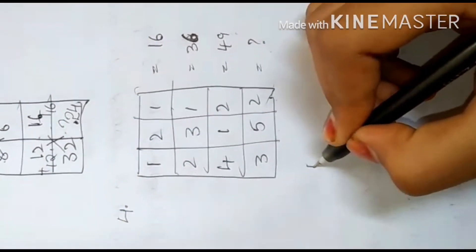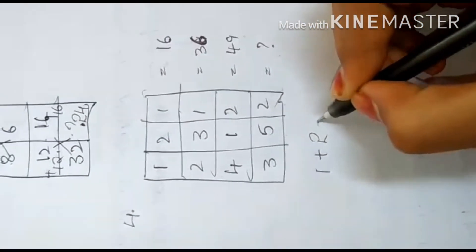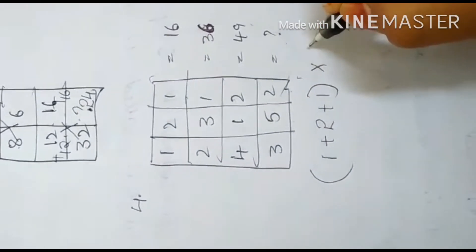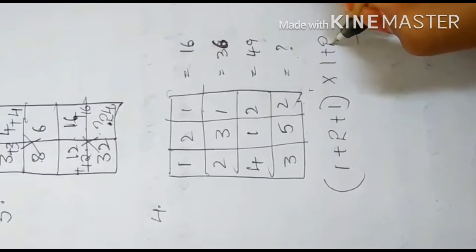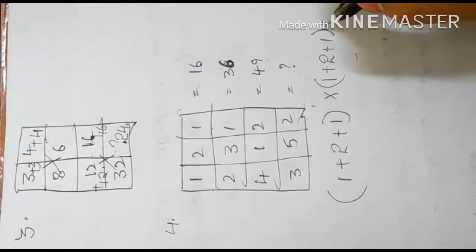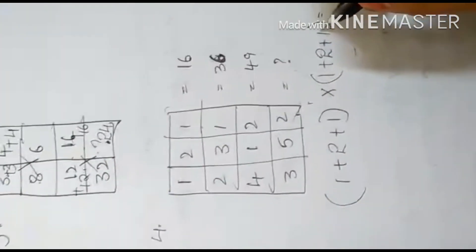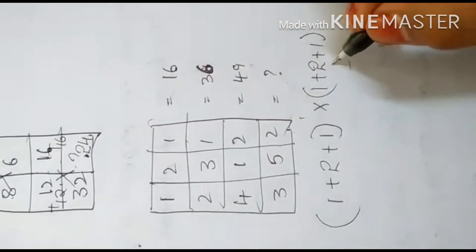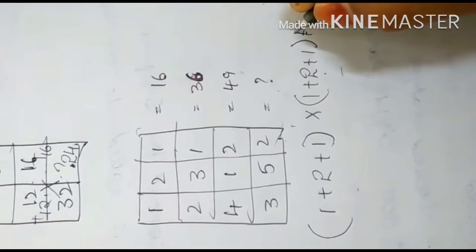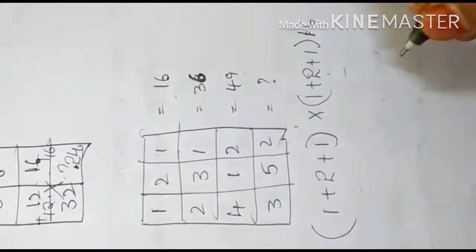For that, we want, see, 1 plus 2 plus 1. We should take in brackets, into same number. 1 plus 2 plus 1 equals 4. See, 1 plus 2 plus 1 equals 4, and this is also 4. 4 times 4 is 16. We got here answer 16.